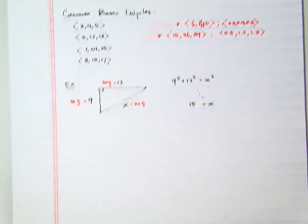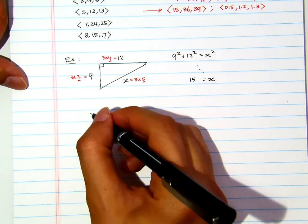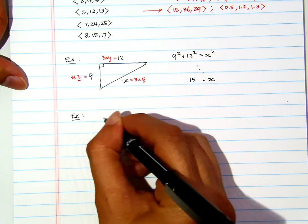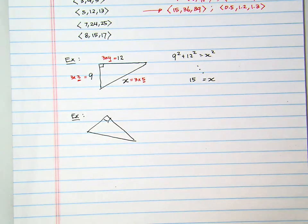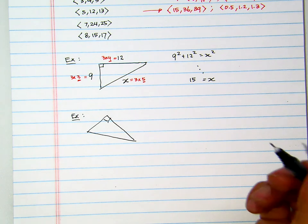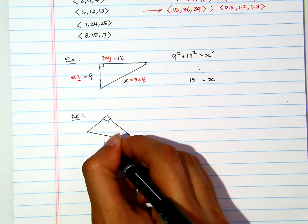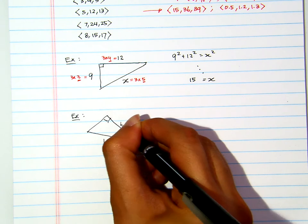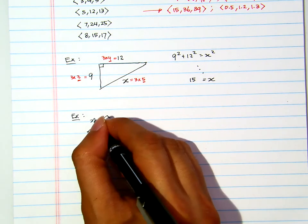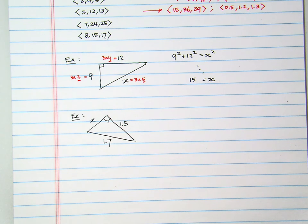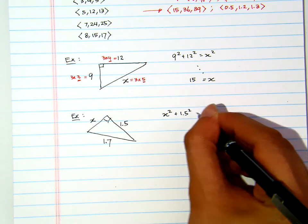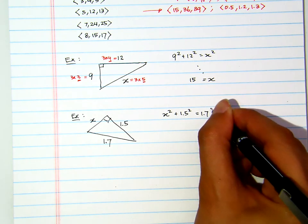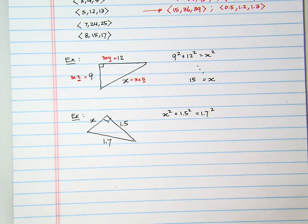Now, another one. This may be even harder to see. Suppose I have a right triangle like this. And let's say this is one point seven. This is one point five. And let's say this is x. Again, you can use Pythagorean theorem. X squared plus one point five squared equals to one point seven squared. And then, from there, you solve it. You get the x.